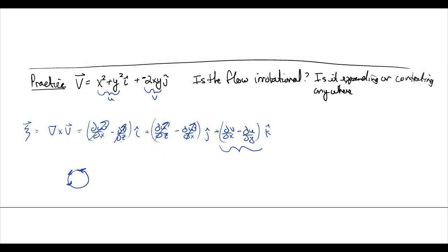So dv dx, now psi is equal to dv dx, which is negative 2y, minus du dy, which is 2y, which gives us negative 4y. So, this is not equal to 0, so it is rotational flow.